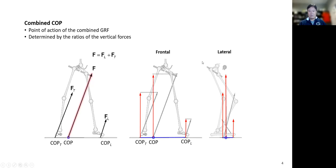In the frontal view, the red arrows show the magnitudes of the vertical forces — the vertical force on the trail foot and the vertical force on the lead foot. If the total is 100 percent, and this is 75 percent here and 25 percent there, then the combined center pressure also shows the same ratio.